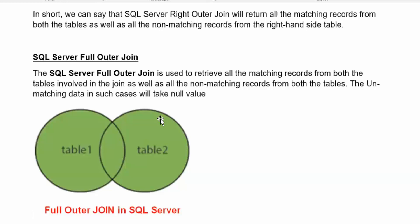What is the full outer join? If you look at this picture, the full outer join is used to retrieve all the matching records plus all the non-matching records from both tables. In simple terms, you can say that full outer join is the left and right outer join combination. So when you need both the right results and the left results, instead of running them separately, you use full outer join.